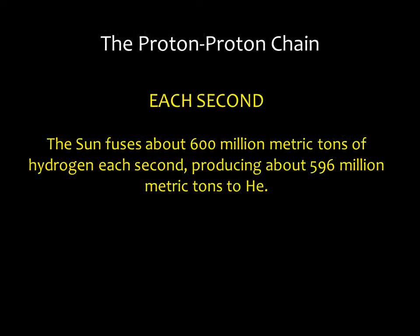Fusion in the sun converts about 600 million tons of hydrogen into 596 million tons of helium every second. That means 4 million tons of matter is turned into energy every second. This sounds like a lot, but it's actually a tiny fraction of the sun's total mass. There's enough hydrogen in there to last another 5 billion years.